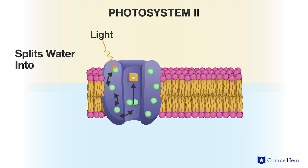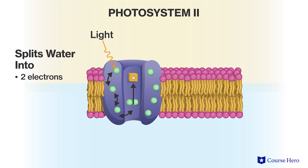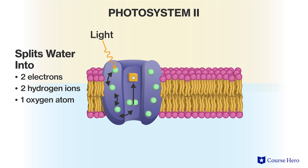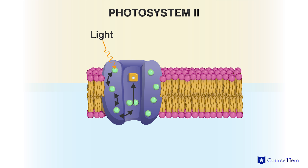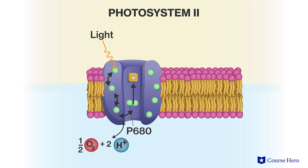An enzyme catalyzes the splitting of water into two electrons, two hydrogen ions, and an oxygen atom. The electrons from this reaction are transferred to P680, returning P680 to its initial state. The oxygen atom combines with another oxygen atom to make oxygen gas, and the hydrogen ions are released into the thylakoid lumen, where they create a proton gradient that will be used to form ATP by the process of chemiosmosis.